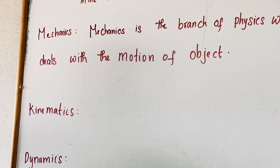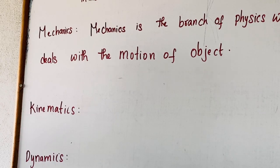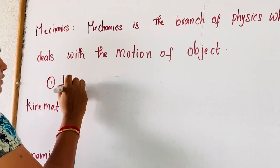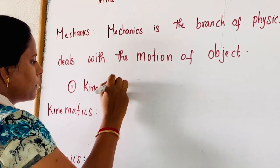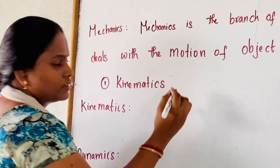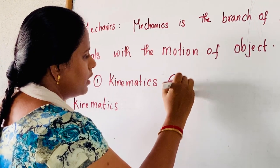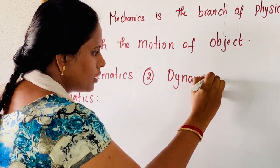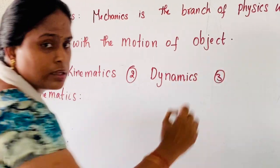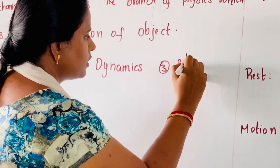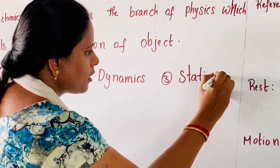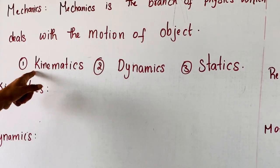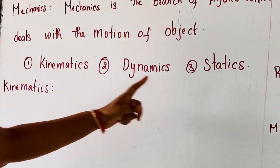Now mechanics is again divided into 3 types. The first one is kinematics, the second one is dynamics, and the third one is statics. Now I am going to explain all the terms here.